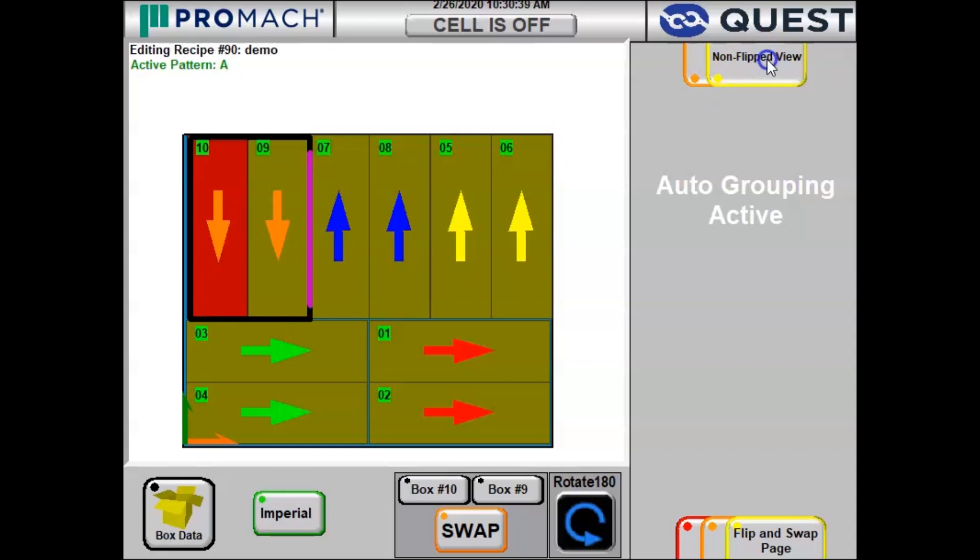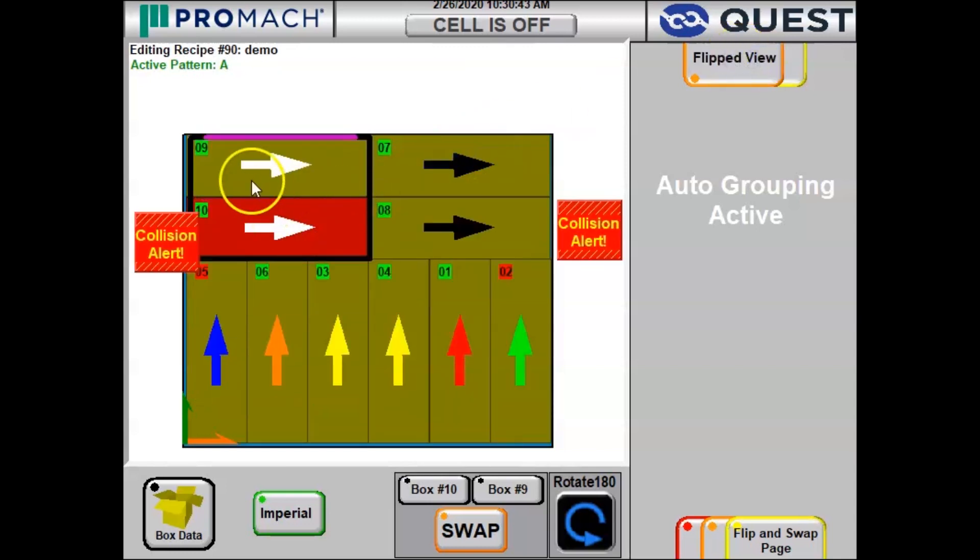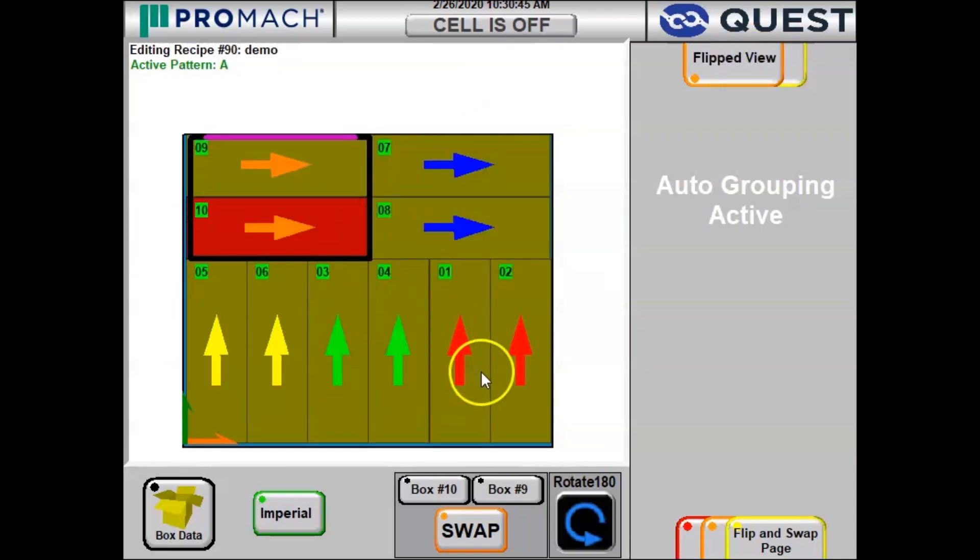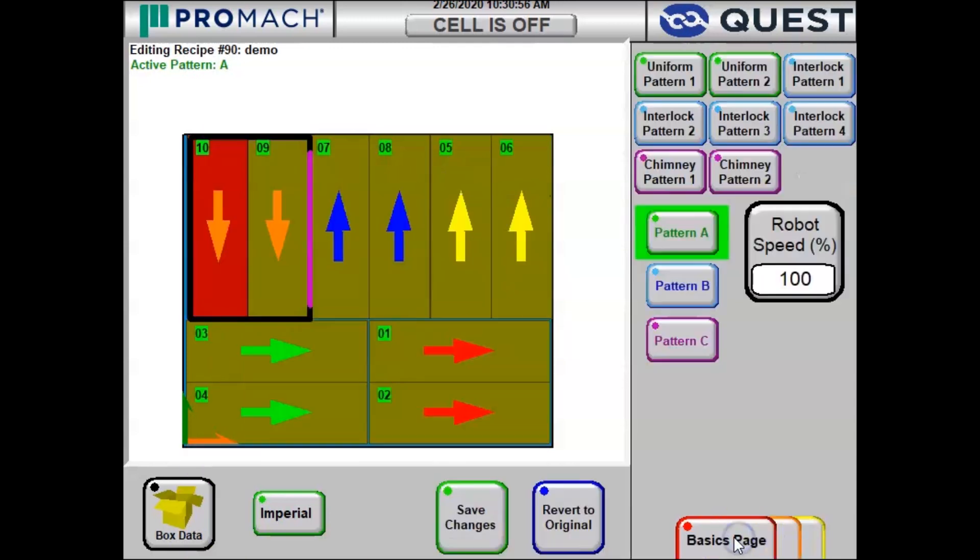Now we're going to check the flipped version of this pattern because it has automatically generated a flipped version for us so we can create a nice interlocking as the stack goes up. This looks good. We're going to go back to the basics page and from here we can save our changes.